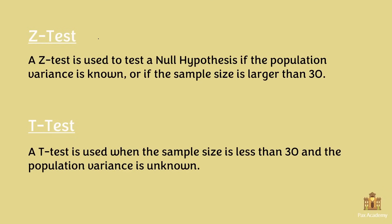Let's look at the z-test and the t-test in hypothesis testing. The first thing to have clear in our minds is when to use which. The z-test is used to test a null hypothesis if the population variance is known, or if the sample size is larger than 30.